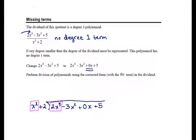2x cubed divided by x squared is going to leave me 2x. Now I take that 2x and I multiply it by the whole divisor, x squared plus 2,